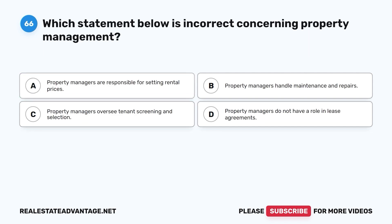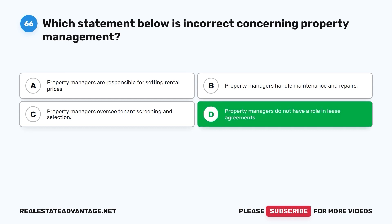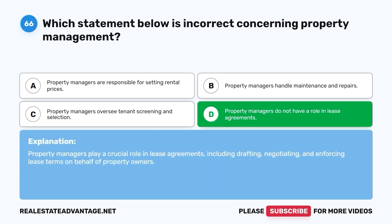Question 66. Which statement below is incorrect concerning property management? A. Property managers are responsible for setting rental prices. B. Property managers handle maintenance and repairs. C. Property managers oversee tenant screening and selection. D. Property managers do not have a role in lease agreements. The correct answer is D. Property managers play a crucial role in lease agreements, including drafting, negotiating, and enforcing lease terms on behalf of property owners.